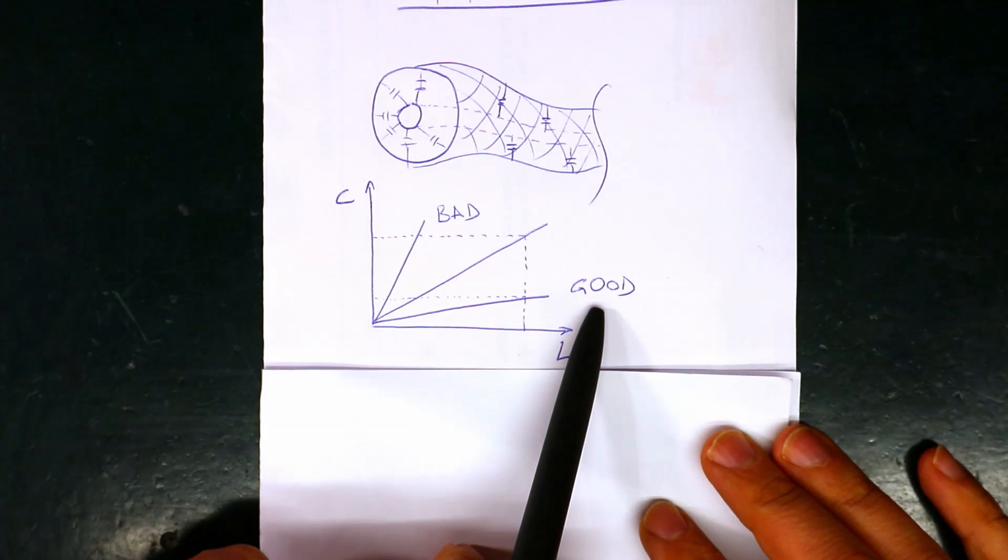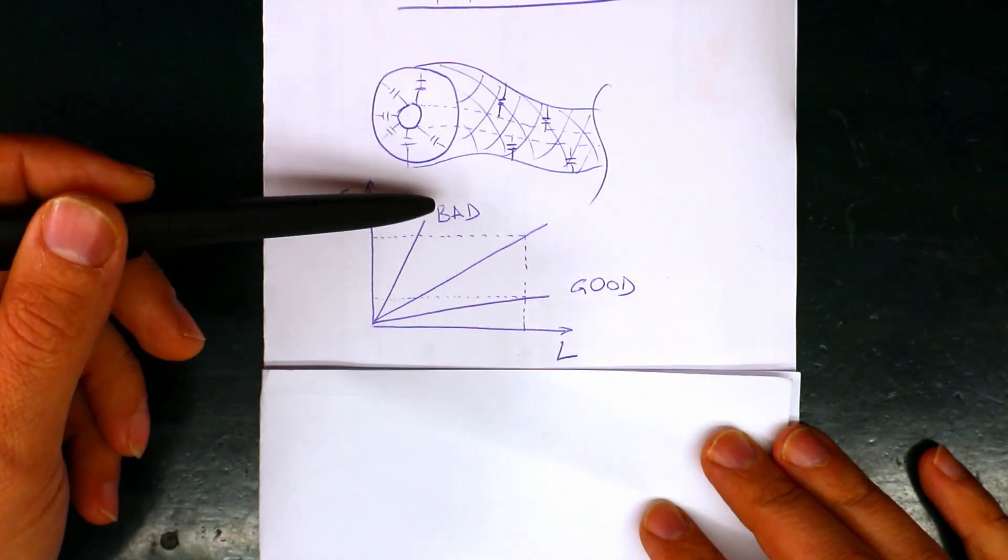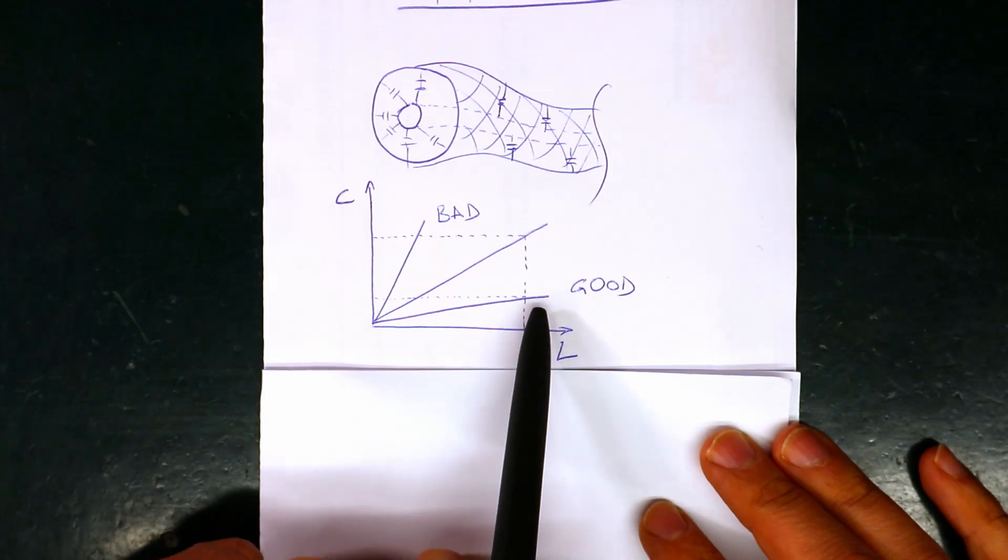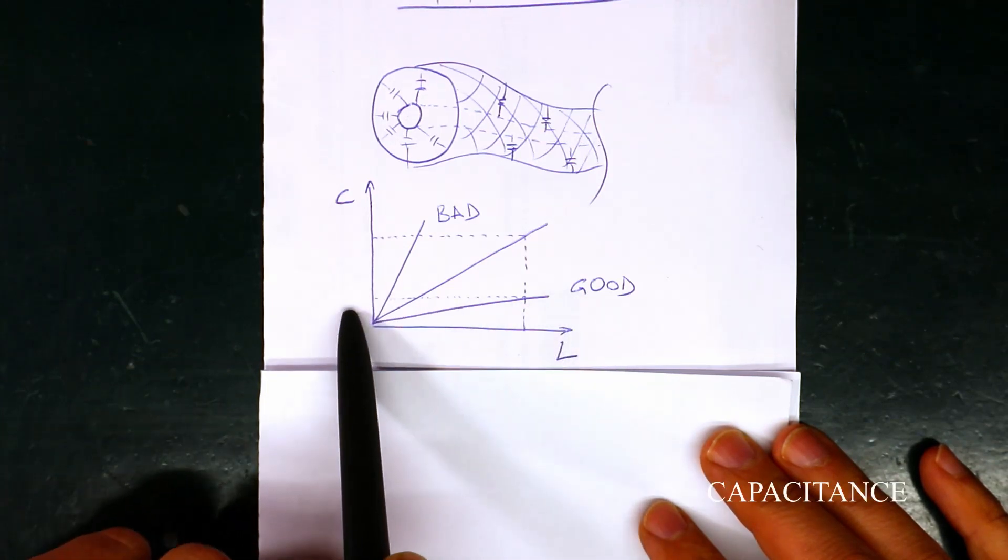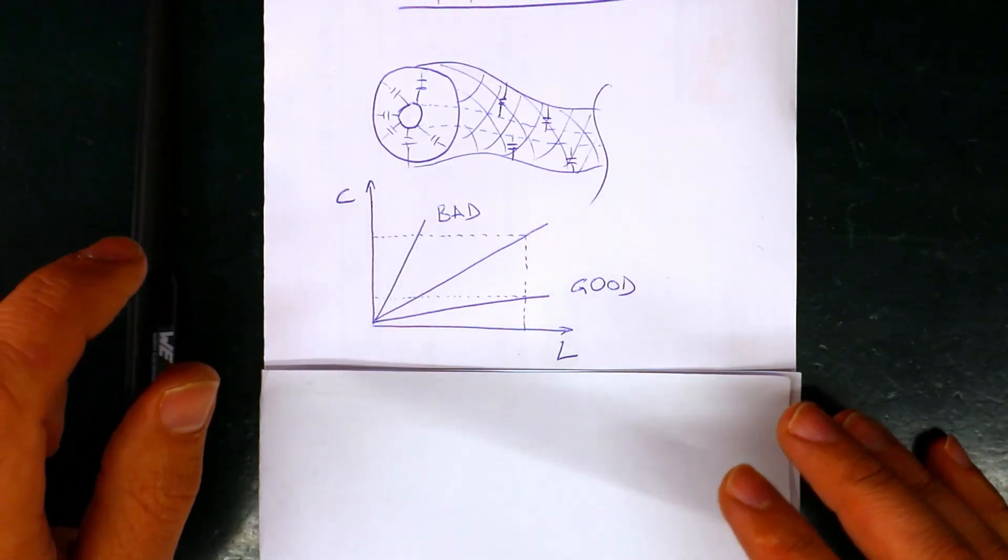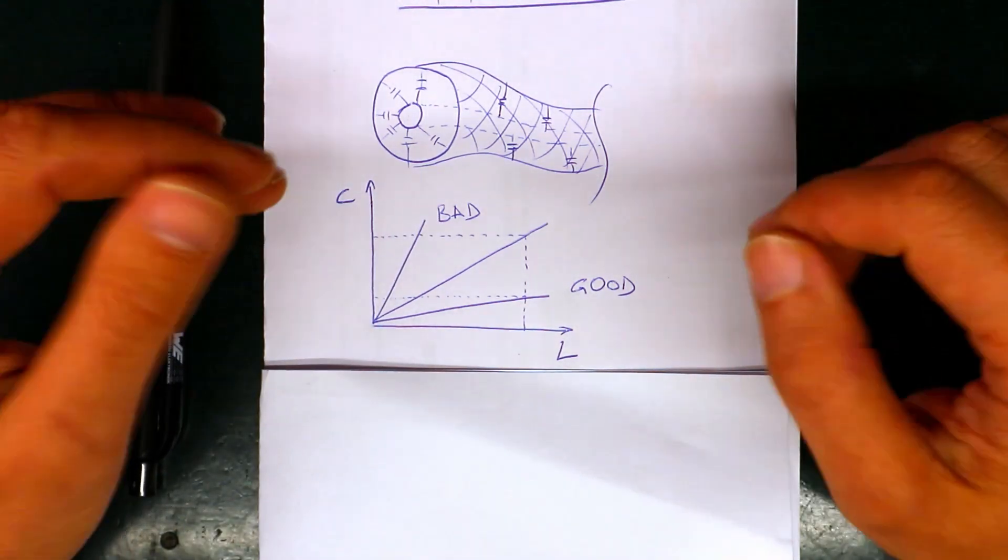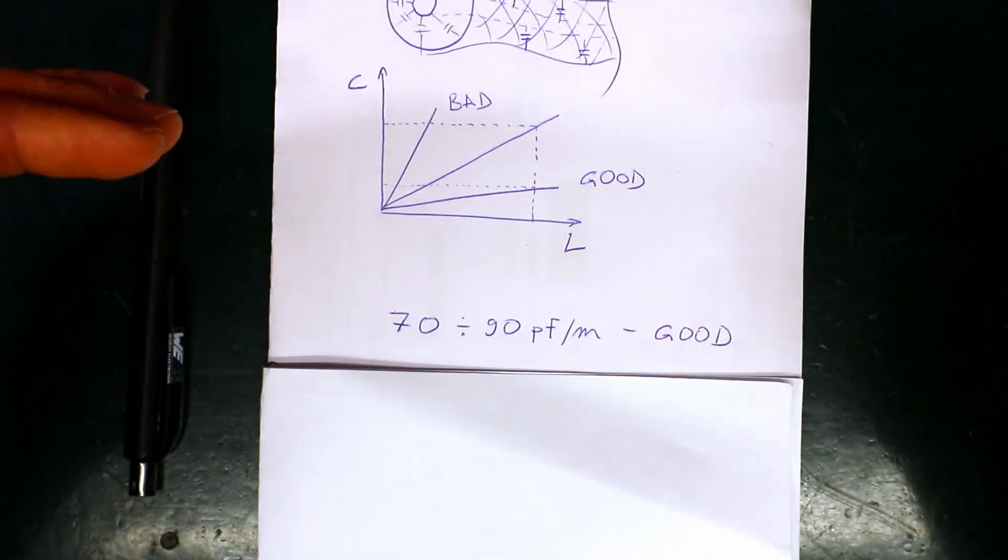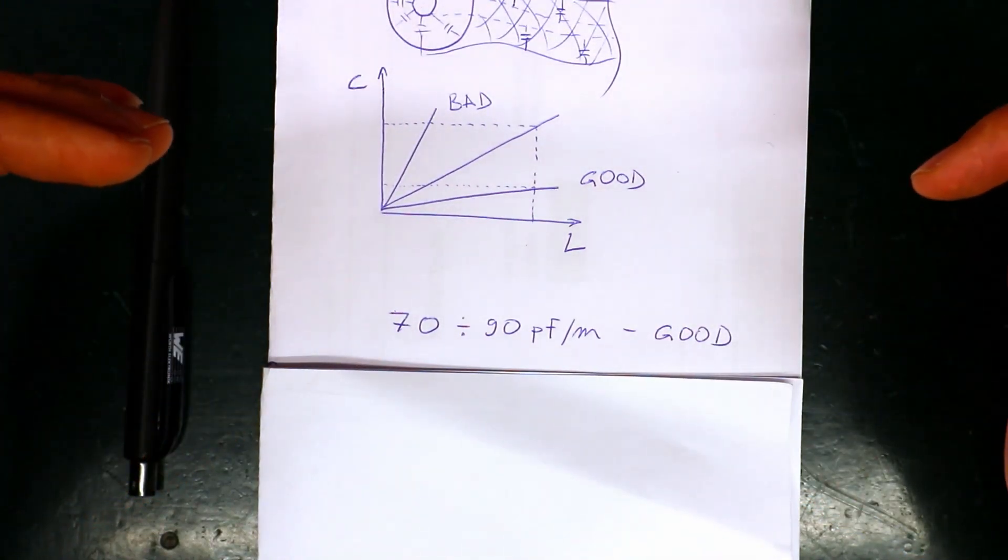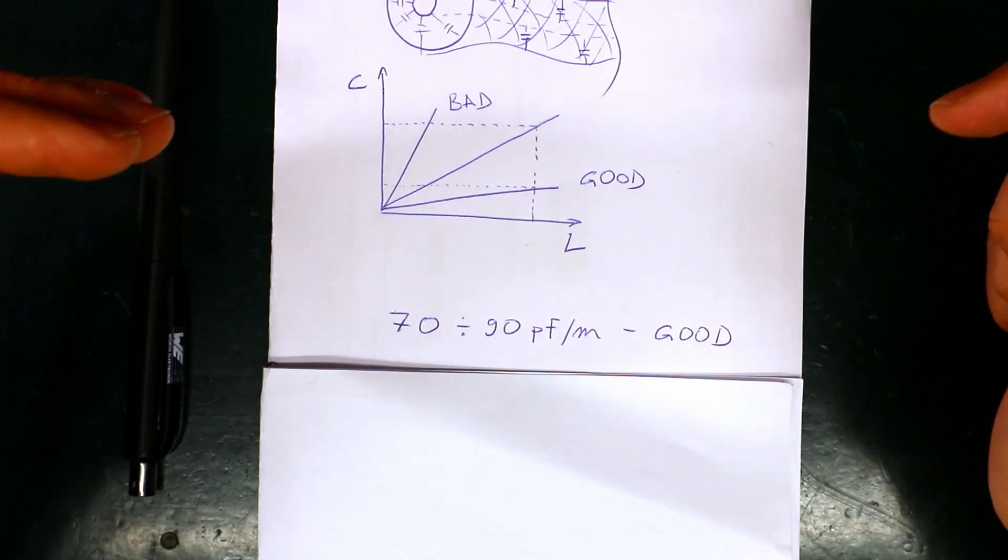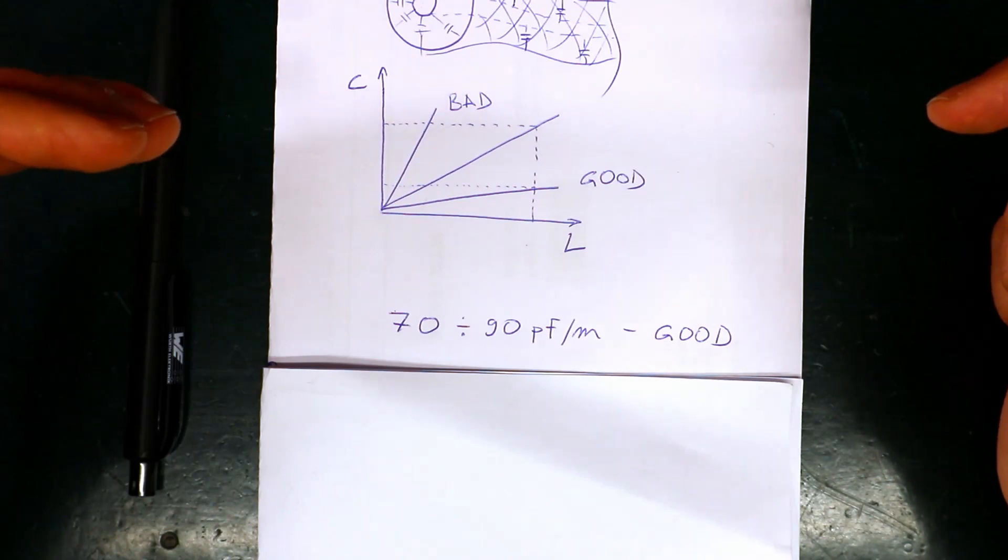So this is the good cable and of course this is the bad cable. This is the good cable because for this given length this cable has the lowest capacity. And the typical capacity of the guitar cables varies but I think that good cables are these cables which have about 70 up to 90 and even 100 pF per meter.